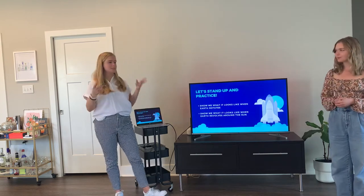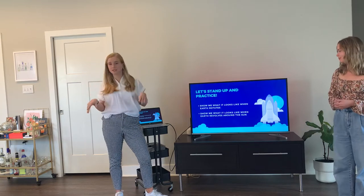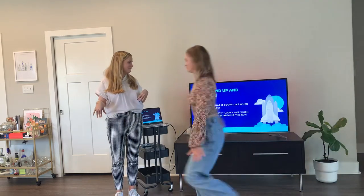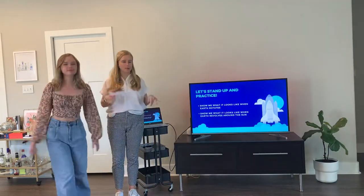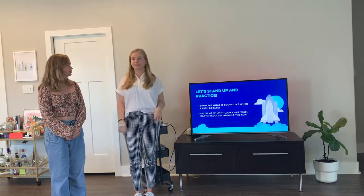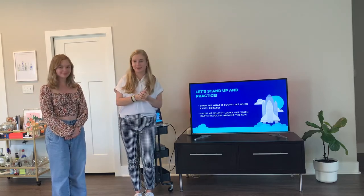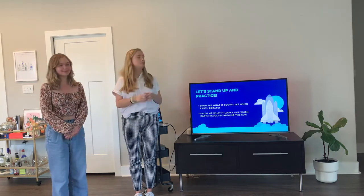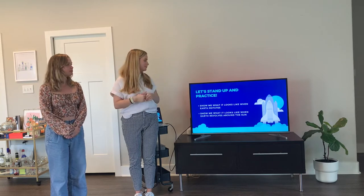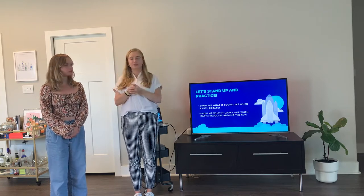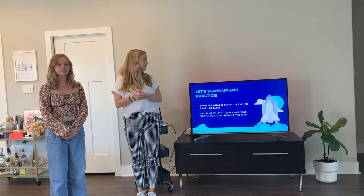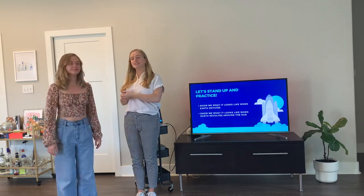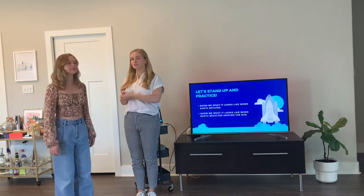Those concepts might seem a little similar, so we're going to do a partner activity so you can figure out which one is which. Ms. McMasters is going to come over here. Everyone stand up and pick your partner. One partner is going to be the Sun and hold the flashlights that we handed out earlier. The other partner is going to be the Earth. Sun, stand in place, shine your flashlight, and show me what it looks like when Earth rotates — Earth is spinning on its axis. Notice that she's standing in place, turning on her axis, which is her center point.